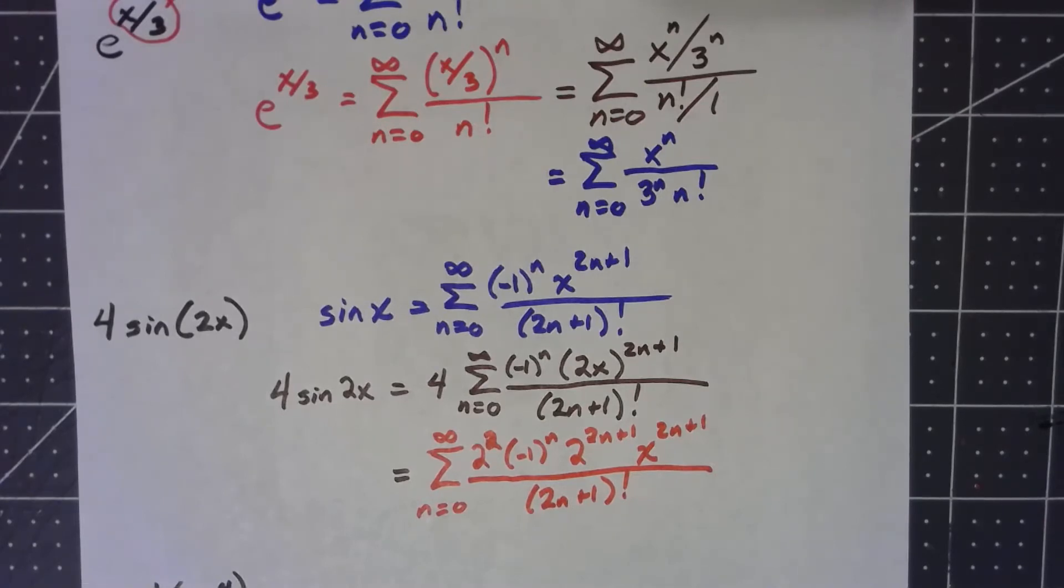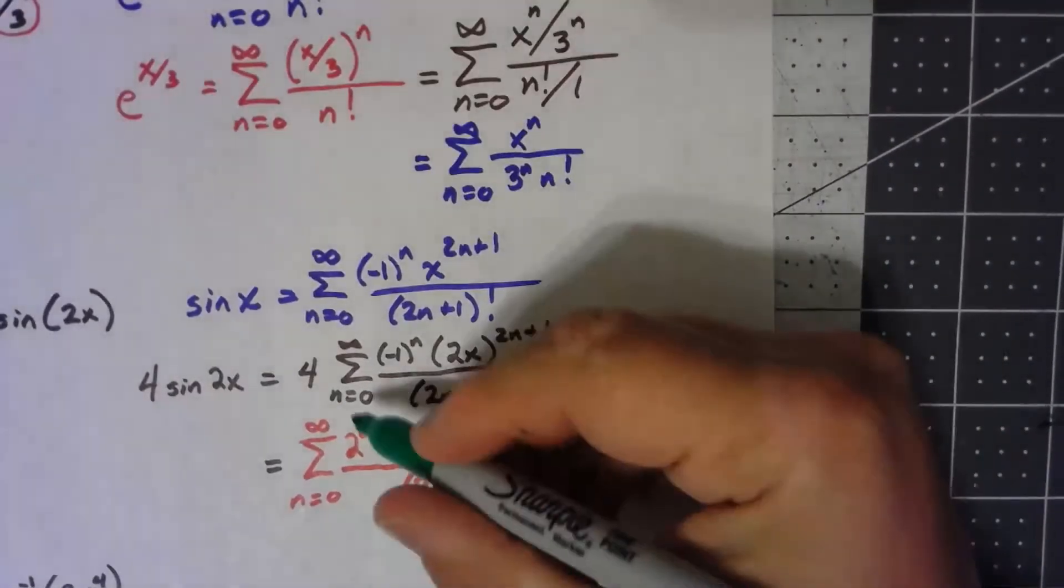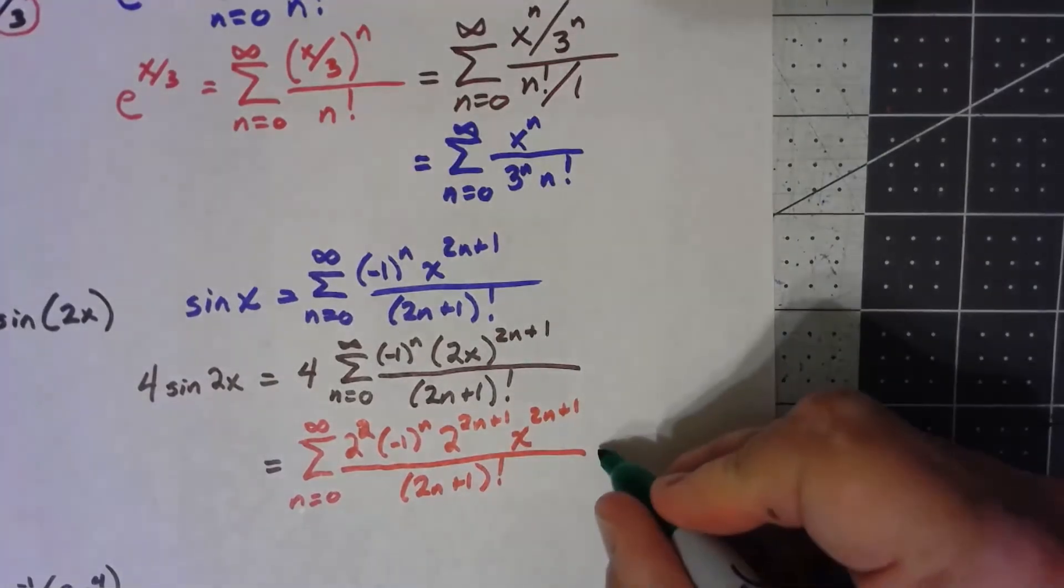Now there's not a lot I can do with this, but there is one thing, and that's the reason I wanted to write that as 2 squared. Because now I've got a 2 to a power times a 2 to a power. I can add the powers.